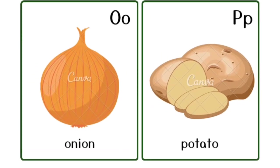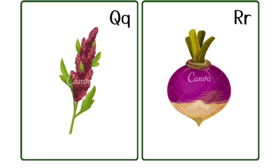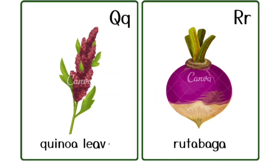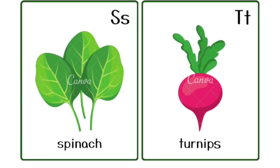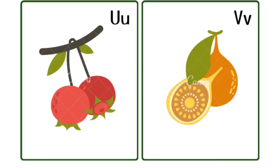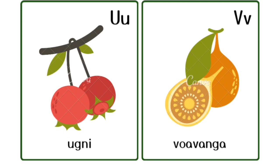Q is for queen, k-k-queen. R is for rabbit, r-r-rabbit. S is for sun, s-s-sun. T is for toad, t-t-toad.